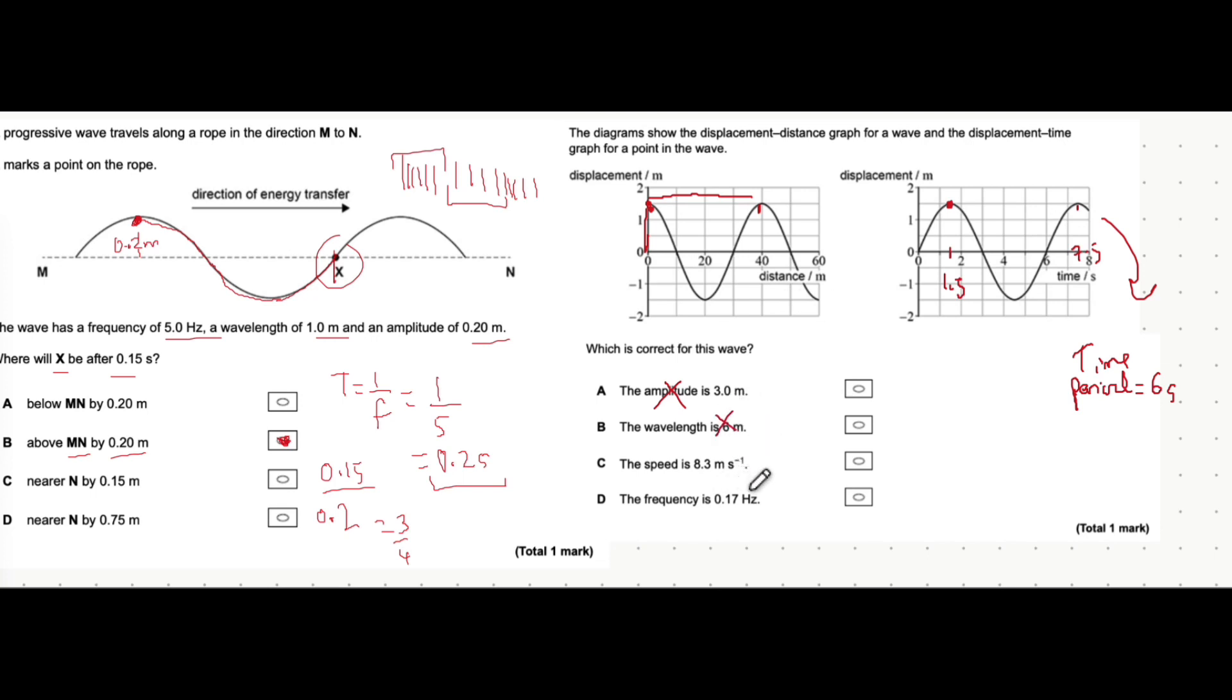The speed is 8.3. Straight off the bat, I think D is the correct answer, because we know frequency is 1 over time period. And we've done the process of finding the time period of 6. And 1 over 6 is 0.17. So it's going to be D.